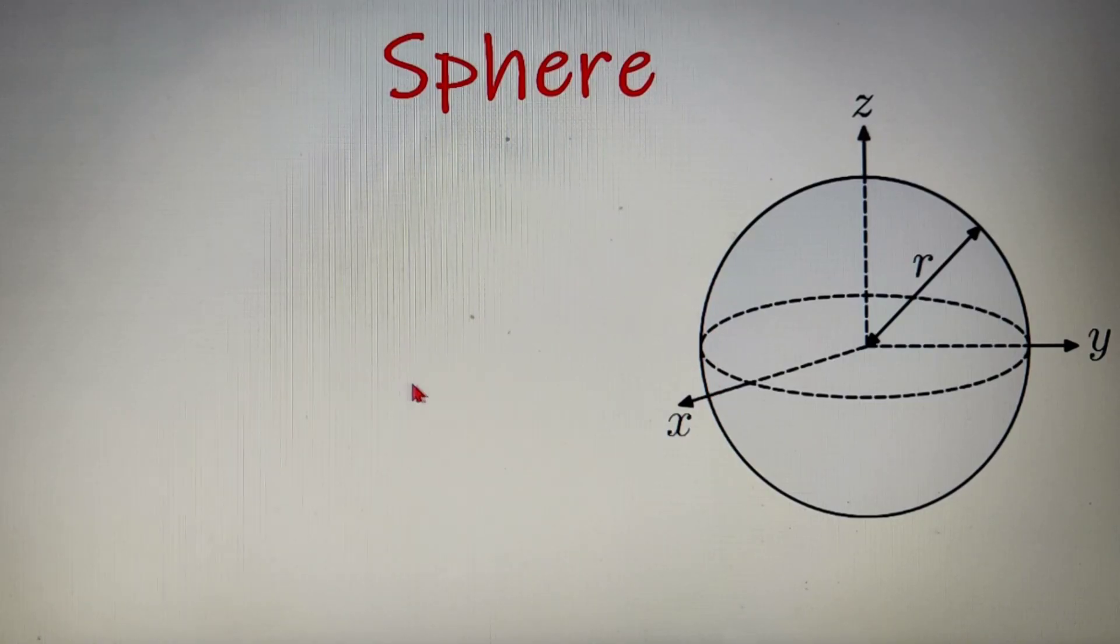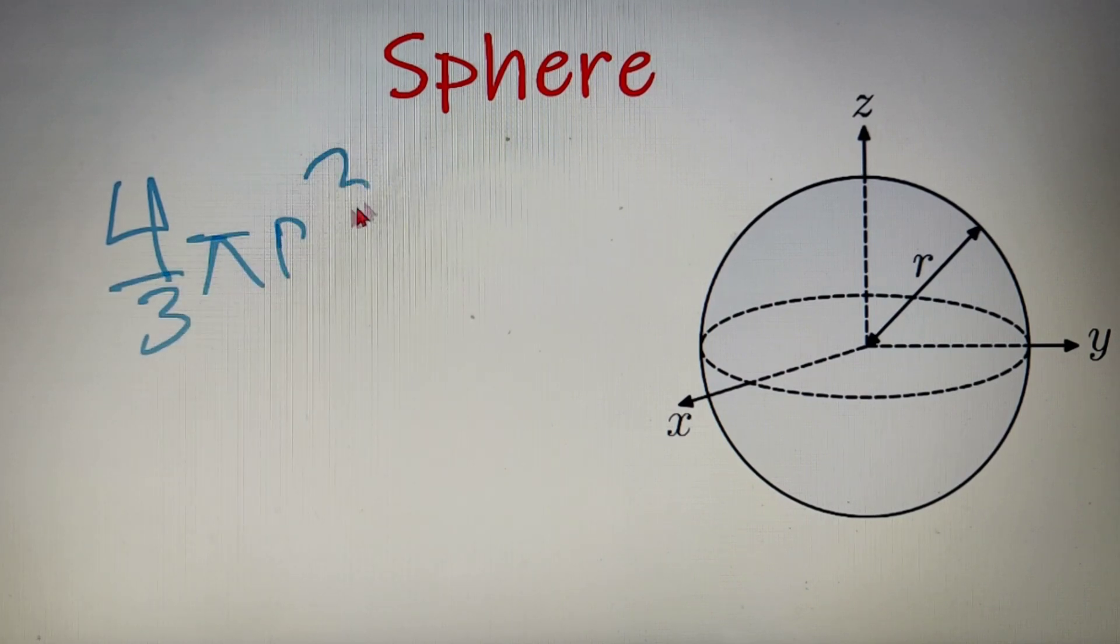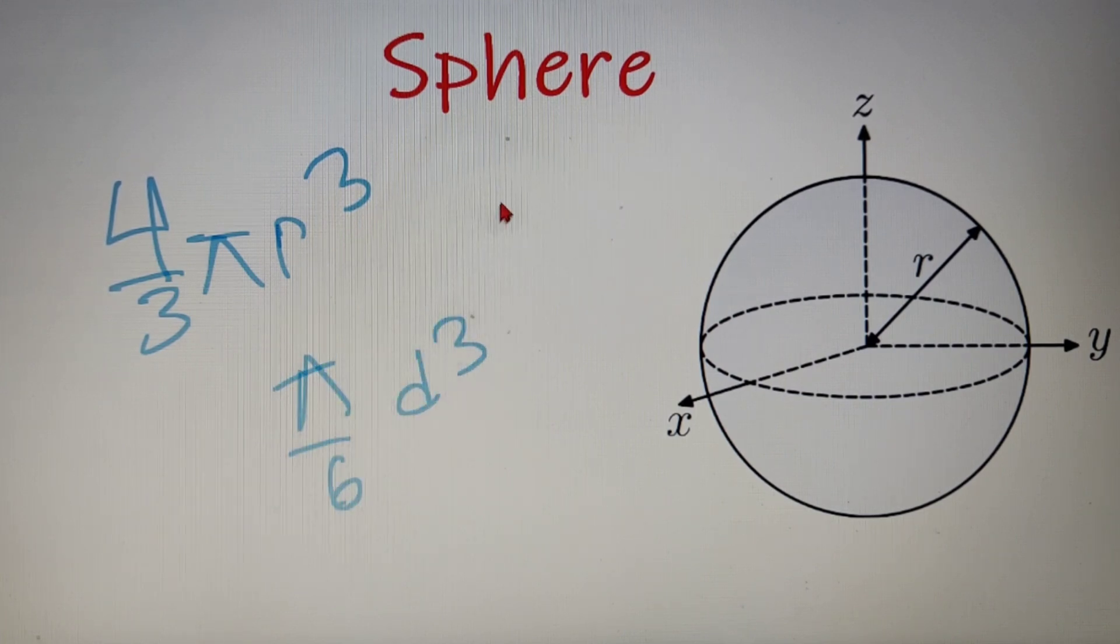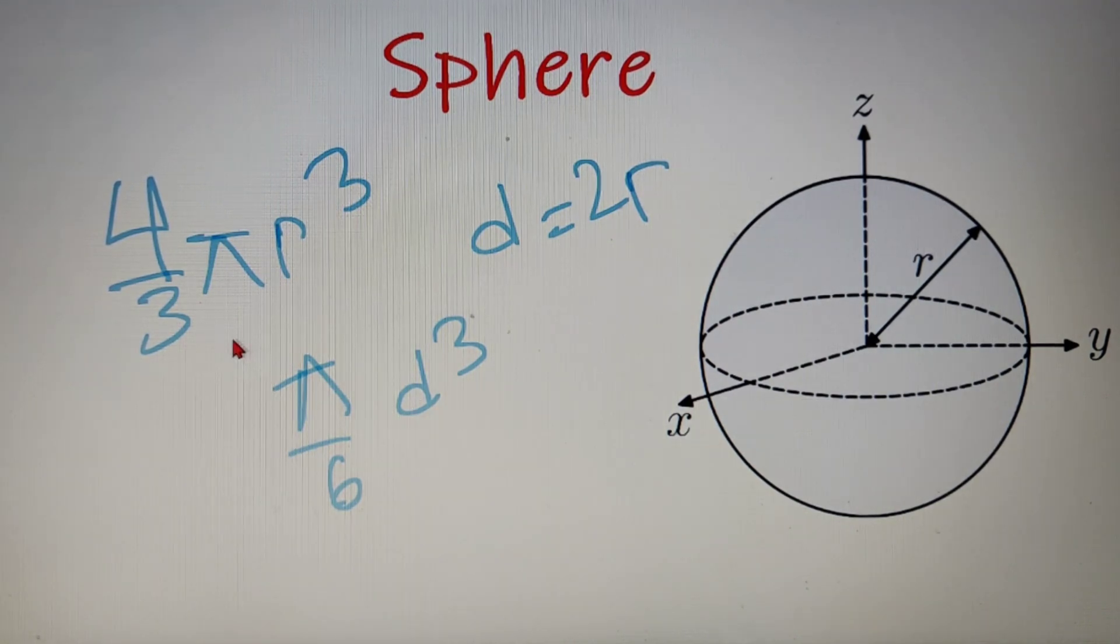Now every three-dimensional figure has an additional property by which it can hold some amount of liquid or fluid inside it, and that property is known as the volume of that respective three-dimensional figure. Now the volume of a sphere comes out to be (4/3)πr³. Now (4/3)πr³ can also be written as (π/6)d³. This is because if I take d as 2r, then d³ is equal to 8r³. Now over here we have only 4r³. So I can multiply and divide both the numerator and denominator by 2 and I will get 8r³ in the numerator which is equal to d³. Thus I can say that the volume of a sphere is equal to (4/3)πr³ or (π/6)d³.